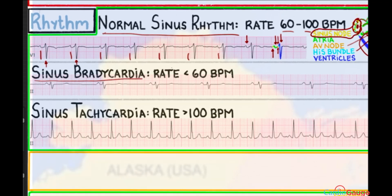Sinus bradycardia is just sinus rhythm with a rate less than 60 beats per minute — you can see this is a slow rate. Sinus tachycardia has a rate greater than 100 beats per minute. Here the distance between QRS complexes is a little less than three boxes, so the rate is probably around 110 beats per minute.